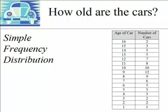With a simple frequency distribution, you have two columns. The column on the left represents each unique response. In this case, each unique response is age of car. So we can see that people have cars that are 1 year old, 2 years old, 3 years old, all the way up to 16 years old.